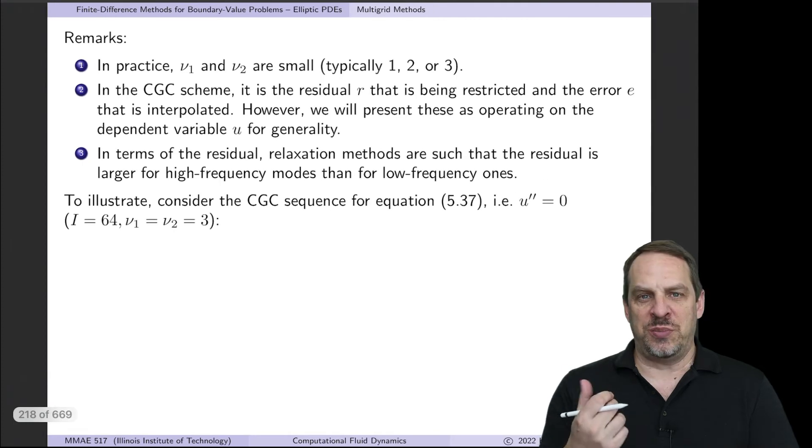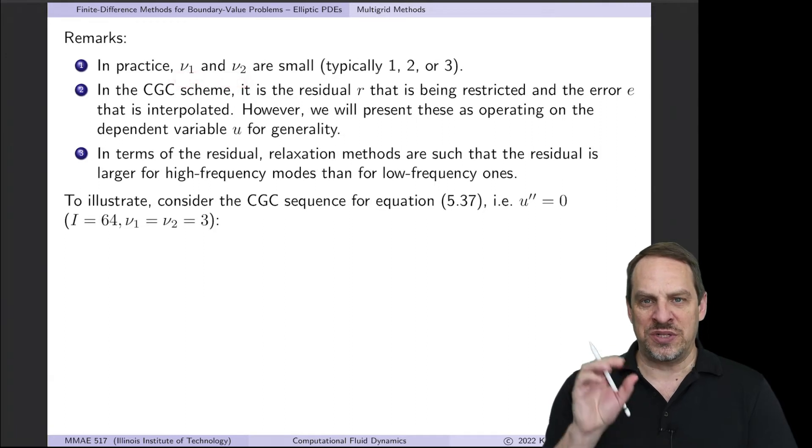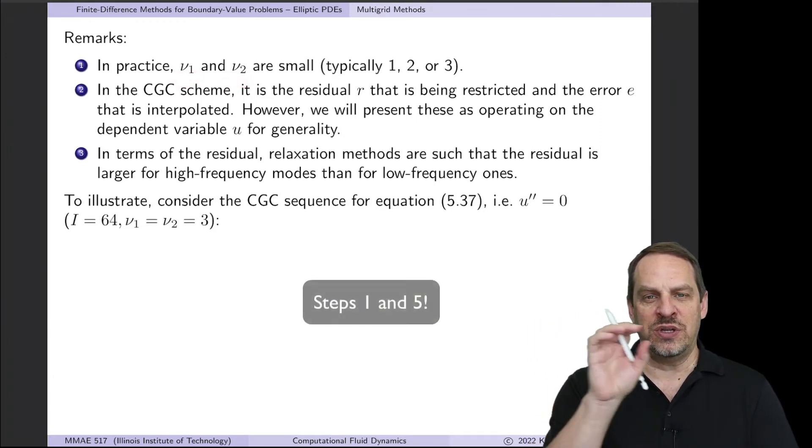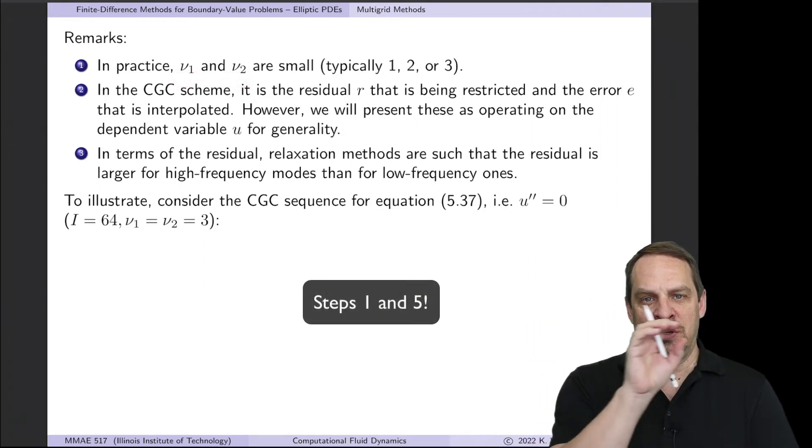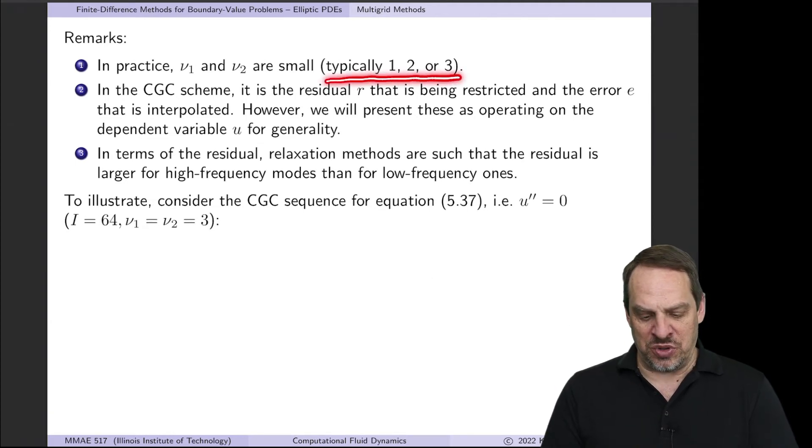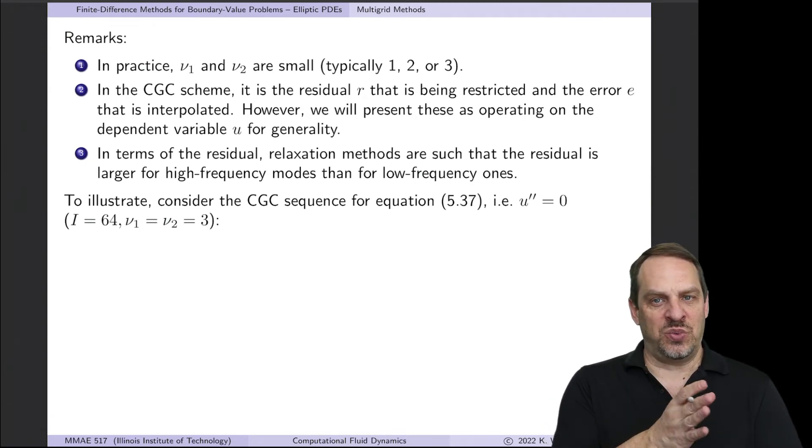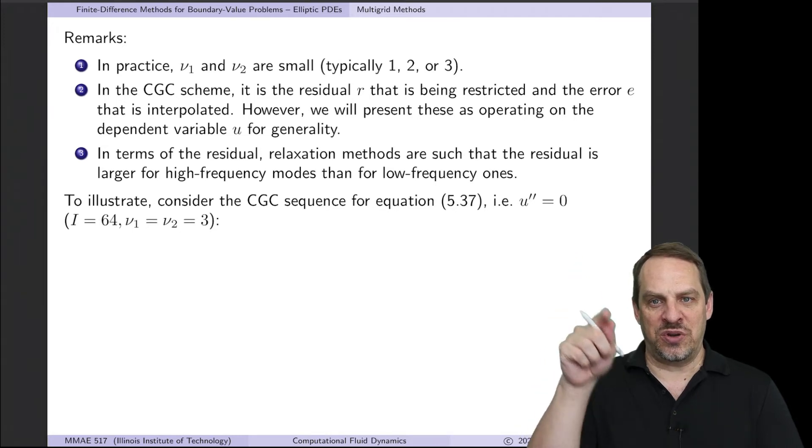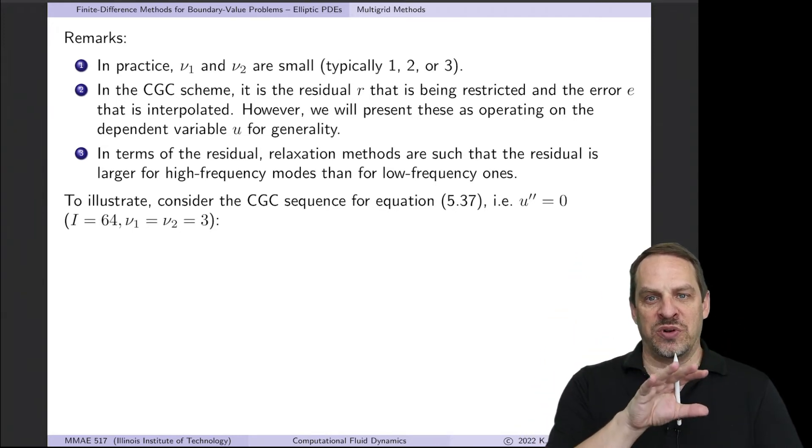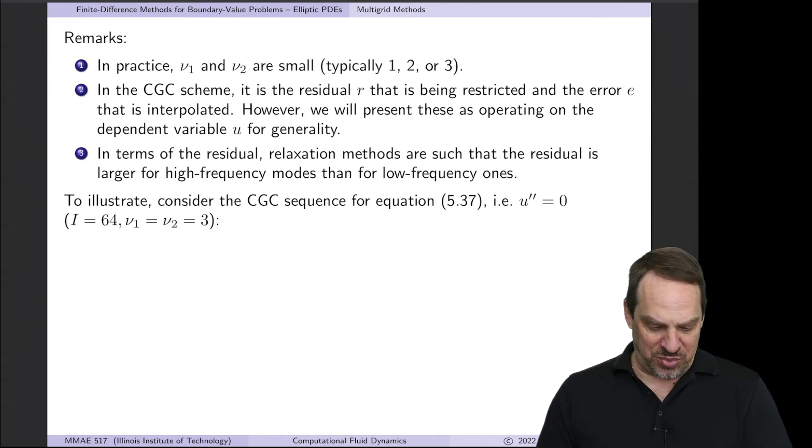So before I show you an example of how this process works, let me just make a few remarks. First of all, this ν_1 and ν_2. Remember that's the number of iterations in step one and step two on the original difference equation on the fine grid. Typically those are very small. One, two, three kinds of numbers. The recognition here is that there's not much benefit in iterating beyond one or two or three times. It's better that we do the coarse grid correction. That'll be more effective in bringing down the total errors. And again, I'll show you that by example in a moment.